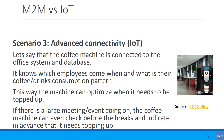If there's going to be a large meeting or event, the coffee machine can check when the breaks are and indicate in advance that it needs topping up. This is an example of IoT — which is much more than the previous M2M case. In the M2M case we only had connectivity and content. In this IoT case, you have cloud — so you can create services based on that — you have context, you have collaboration. So it's a lot more than basic M2M.